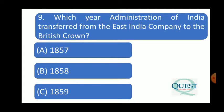Question number 9: In which year was the administration of India transferred from the East India Company to the British Crown? Kaun si saal Bharat ka prashasan East India Company se British Crown ko chala gaya? The answer is 1858.